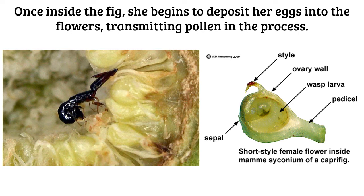Once inside the fig, she uses her ovipositor to deposit eggs into the ovaries of the flowers — the ovipositor goes into the style, down into the ovary, where she lays her egg. You can see here that this egg has developed into a wasp larva inside that ovary wall, which is normally where fruit would be produced with nutrients for a growing embryo. So this production of wasp larvae will not allow for the production of a fig seed — instead of our fruit being full of seeds, it will be full of wasps.